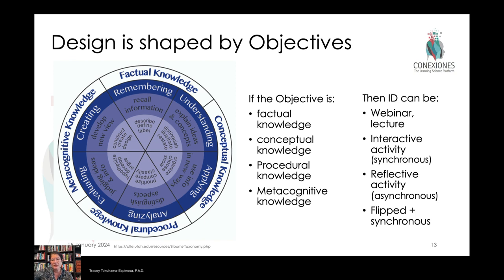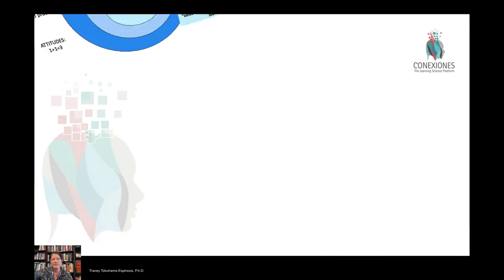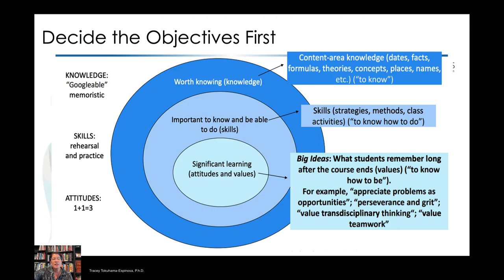If you have metacognitive knowledge as your goal, you should think about deeper learning, flipping the classroom, and then having those deeper discussions when you are face-to-face. Within Wiggins and McTie's model, all learning is the combination of knowledge, skills, and/or attitudes.